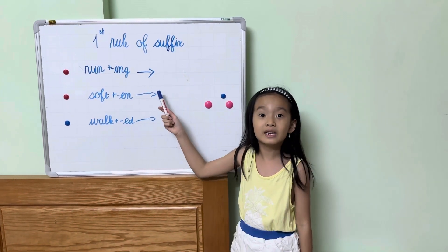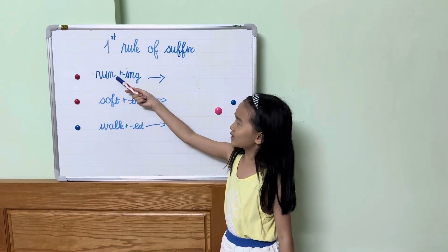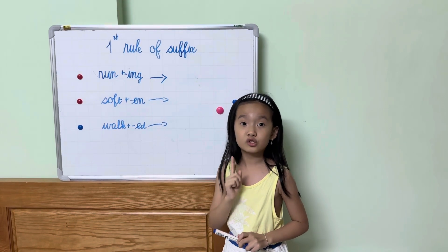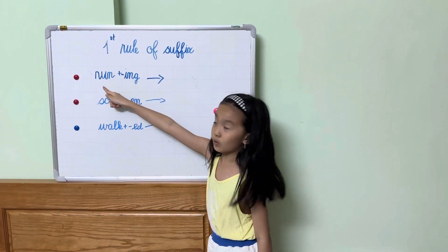And I have some examples up here. Can you tell me what are we going to add to this? Yes, we're going to add another extra N because, can you see, this is a short vowel, isn't it?